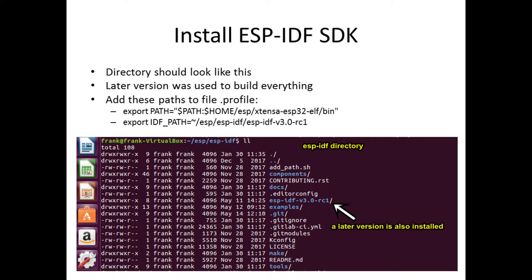To start, the first thing one must do is install the ESP-IDF SDK. After installation, the directory should look something like as shown in this slide. After installing the first version, I discovered that I needed to update to a later version, and you can see here the subdirectory in which the later version is installed. It is also important to add to the profile file the path statements as shown.